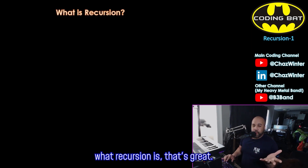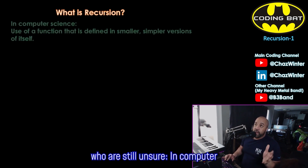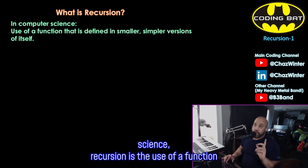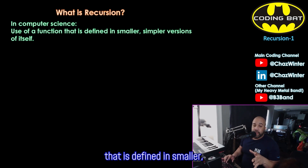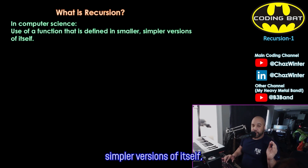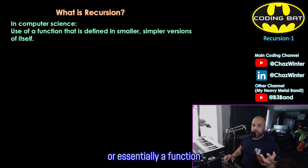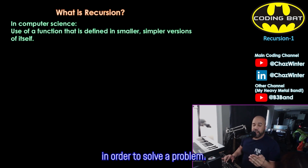And if you already know what recursion is, that's great. But very quickly, for those who are still unsure: in computer science, recursion is the use of a function that is defined in smaller, simpler versions of itself, or essentially a function that calls itself in order to solve a problem.